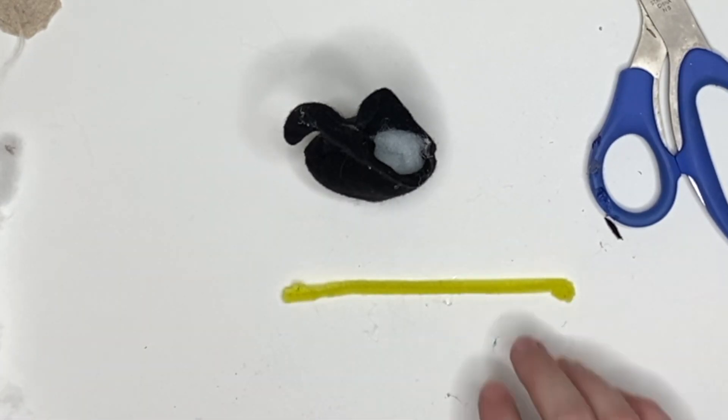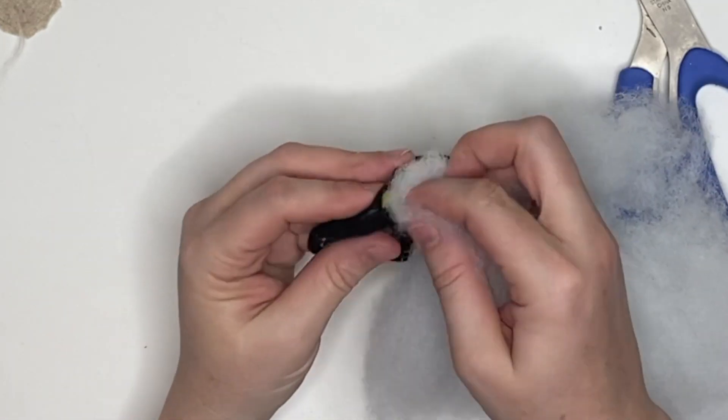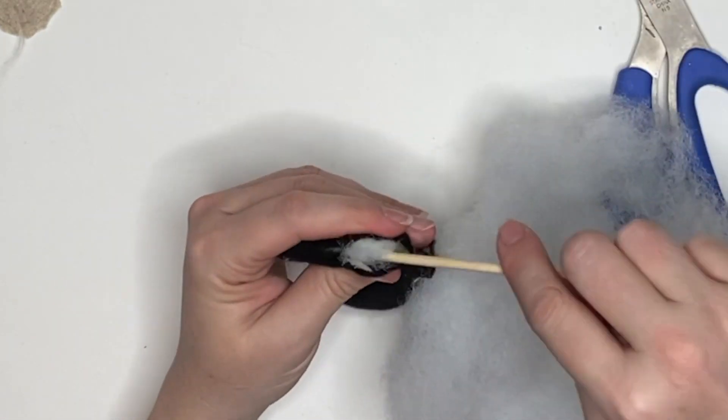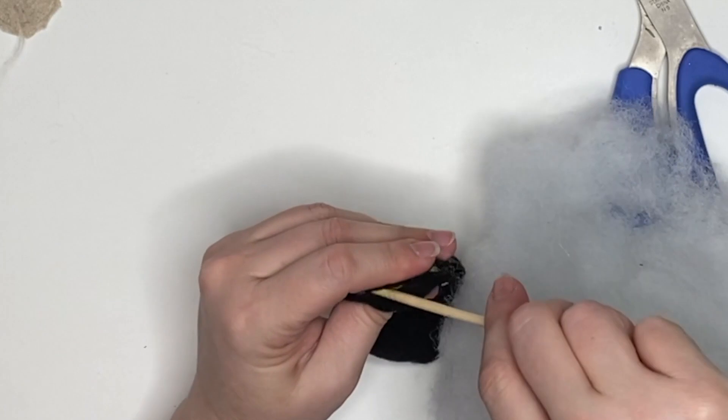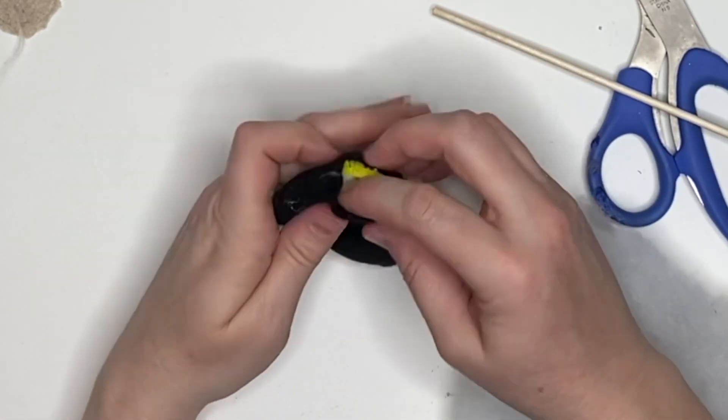And we're going to take a pipe cleaner or a chenille stem, we're gonna cut it in half and fold down the edges so it doesn't poke through. Then we're gonna put that into the tip of the hat all the way down that spine and then finish stuffing with our poly fill.